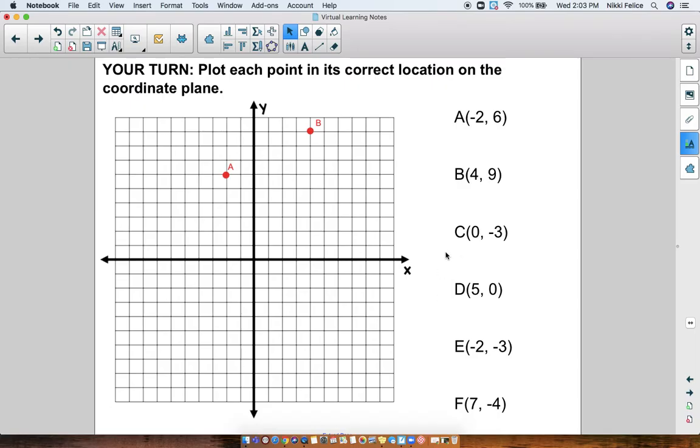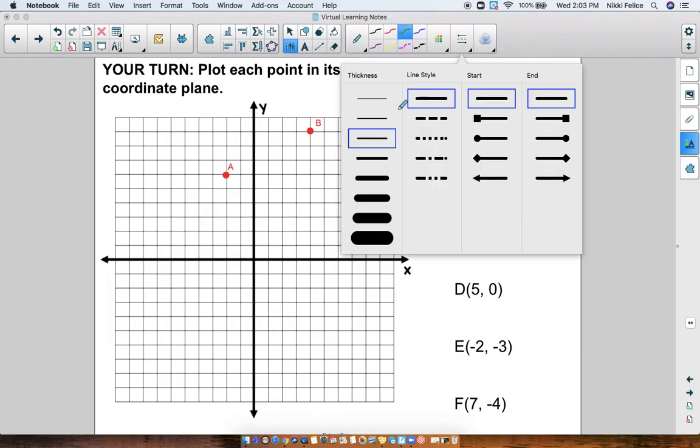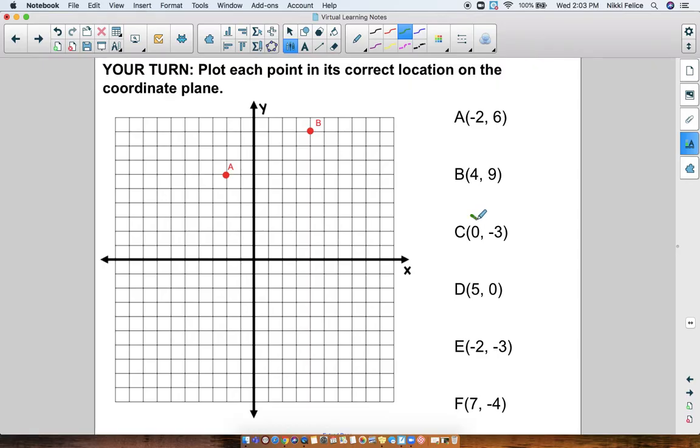Point C and D have those zeros in there, so they're a little tricky. Remember, x comes first. So this right here, this is my x, and this is my y. So x is on 0. So if I'm starting in the middle, where do I go for 0? I don't go anywhere. I stay right here. I don't go to the right or the left. Now for Y, it's negative 3. I go down 3. So 1, 2, 3. Here's point C.